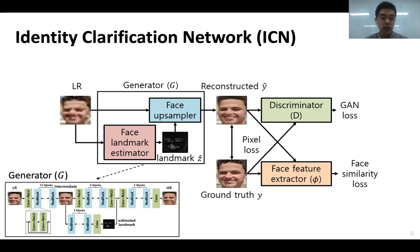To tackle the accuracy challenge, we designed a specialized network that can reconstruct high-resolution faces to enhance the recognition accuracy. We named it the Identity Clarification Network, or ICN in short, which looks like the figure in the slide. It is empowered by several state-of-the-art techniques to achieve the goal.